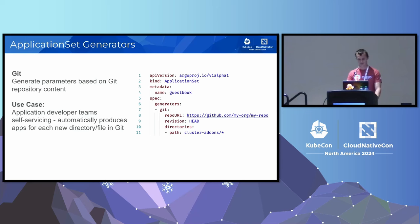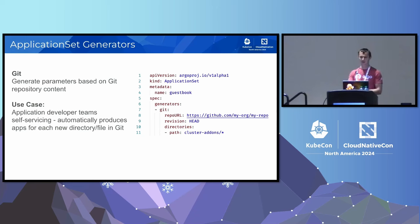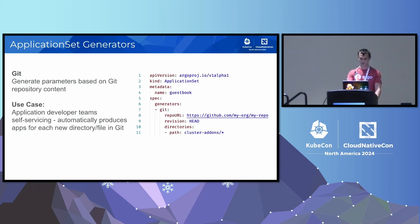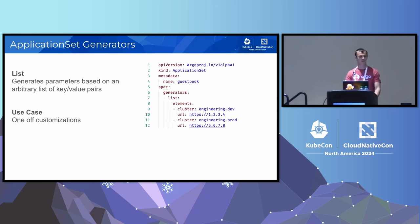The Git generator lets you create applications every time an end user creates a new directory in a Git repository. Another example: as a cluster administrator, every time you create Grafana in your cluster addons repository, you can automatically create a Grafana application across all your clusters. It's simple and not easy to make mistakes. Finally, the list generator supports use cases where you have no convention — you manually define a list of values for your template. Together, these three generators solve the three most important use cases.